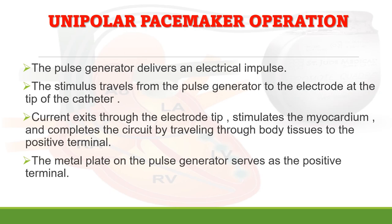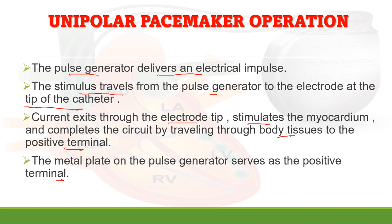In unipolar pacemaker operation, the pulse generator delivers an electrical impulse that travels from the generator to the electrode at the tip of the catheter. Current exits through the electrode tip, stimulates the myocardium, and completes the circuit by traveling through body tissues to the positive terminal — the metal plate on the pulse generator. In bipolar operation, the stimulus travels down the negative electrode wire, is delivered to the myocardium, spreads through cardiac muscle to the positive electrode wire, and returns to the pulse generator completing the circuit.